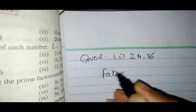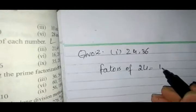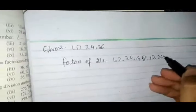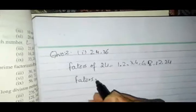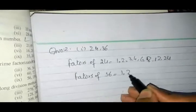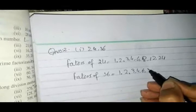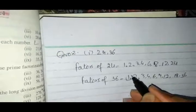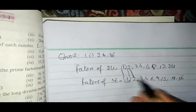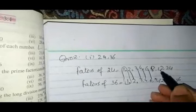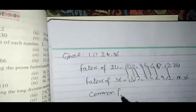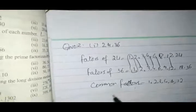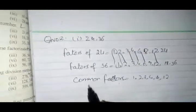We start the first part: 24 and 36. Factors of 24 are: 1, 2, 3, 4, 6, 8, 12, and 24. Factors of 36 are: 1, 2, 3, 4, 6, 9, 12, 18, and 36. The common factors are: 1, 2, 3, 4, 6, and 12. From these, the Highest Common Factor — HCF — is equal to 12.